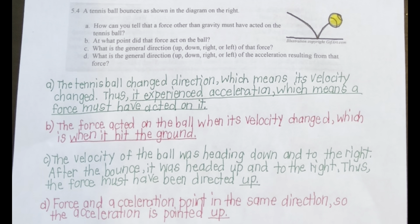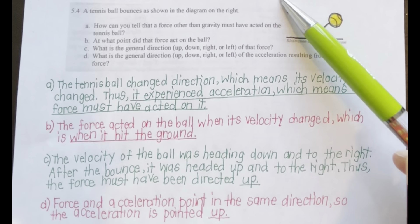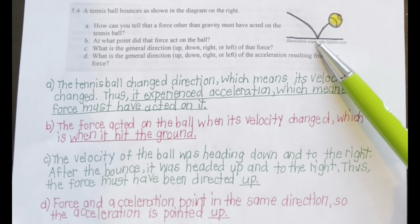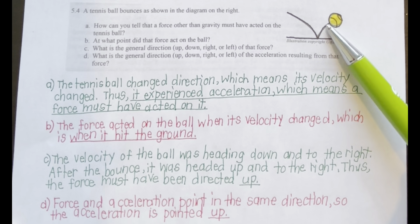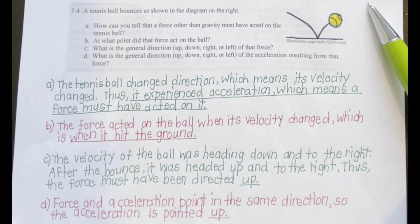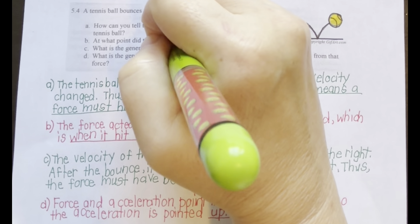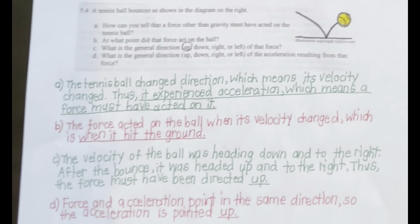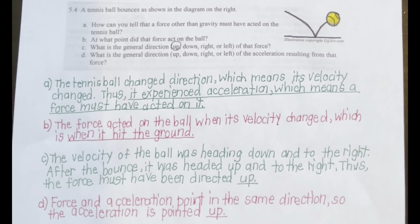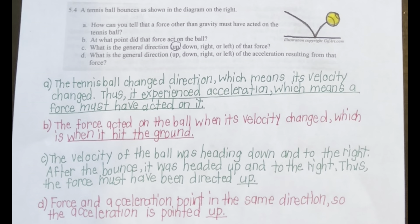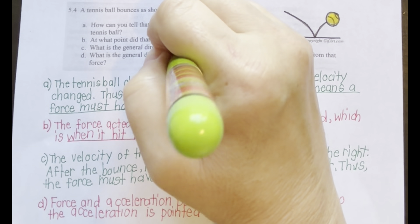C) What is the general direction — up, down, right, or left — of that force? The velocity of the ball was heading down to the right before the bounce, and after the bounce it was headed up and to the right. Thus, the force must have been directed up. D) What is the general direction of the acceleration resulting from that force? We should remember that force and acceleration point in the same direction, so the acceleration is also pointed up.